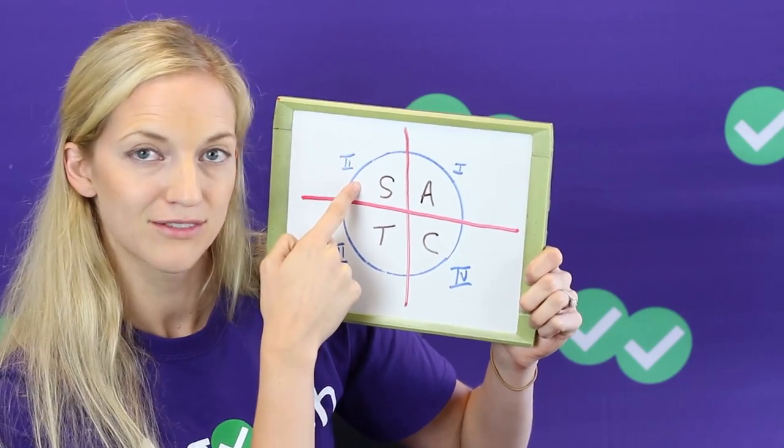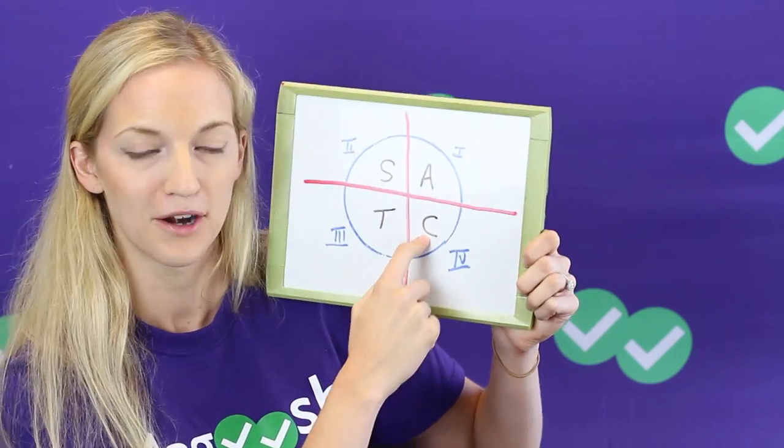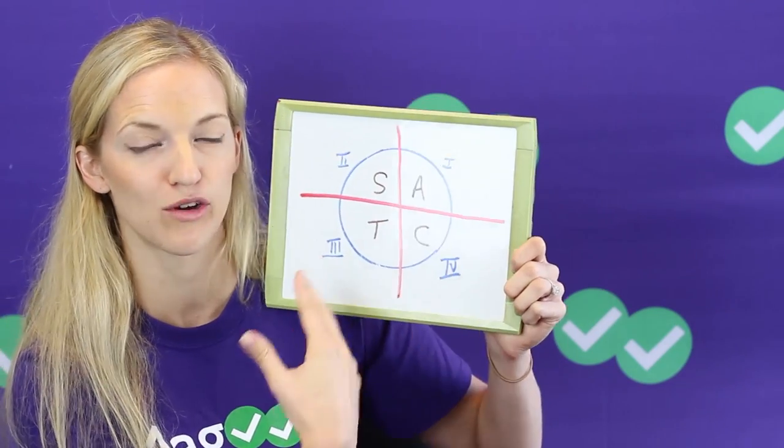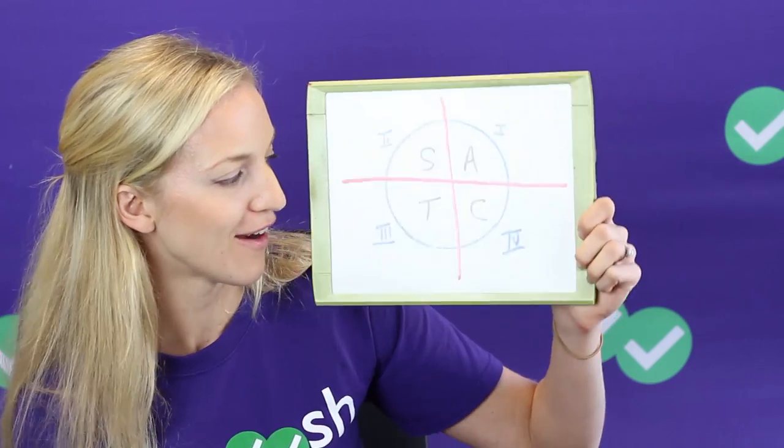Here sine is positive, here tangent is positive, here cosine is positive. So if it's not marked as being positive that means it's negative. So that is an easy way to remember without having to actually really think through why things are positive or negative where they are.